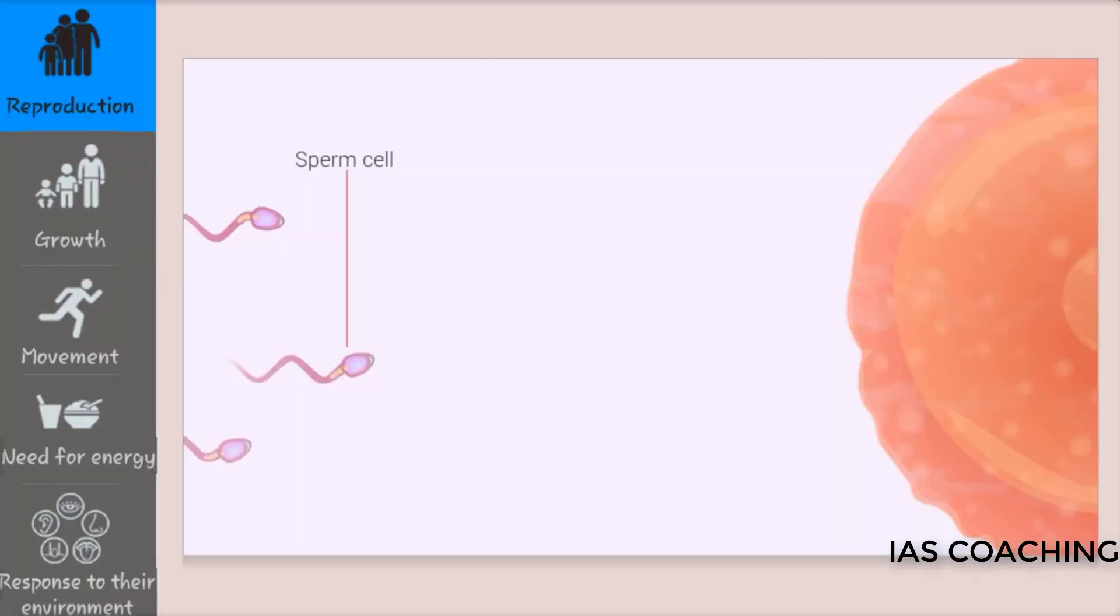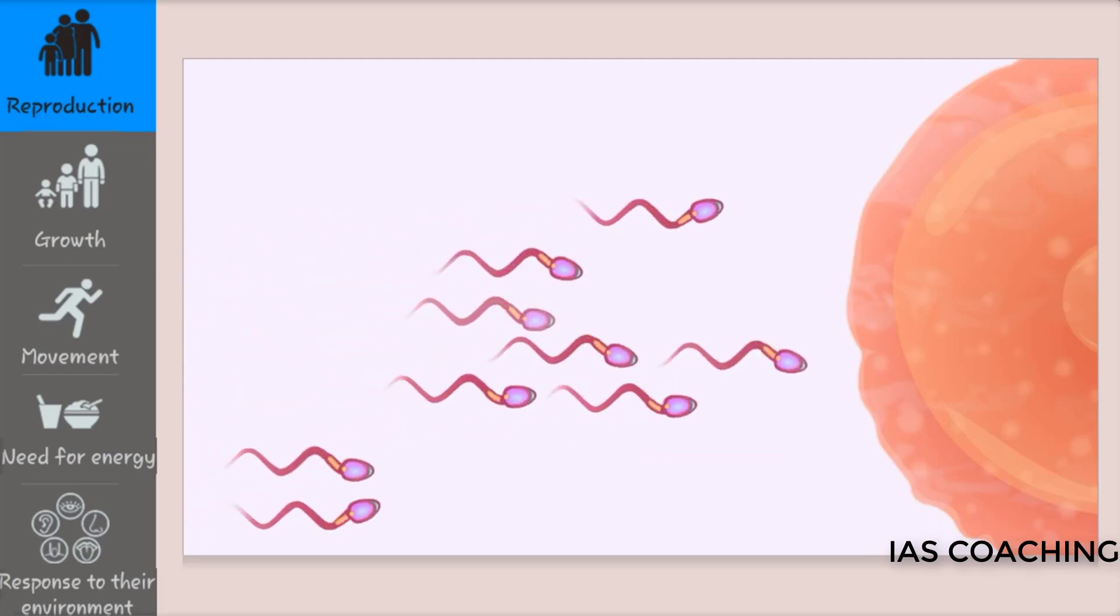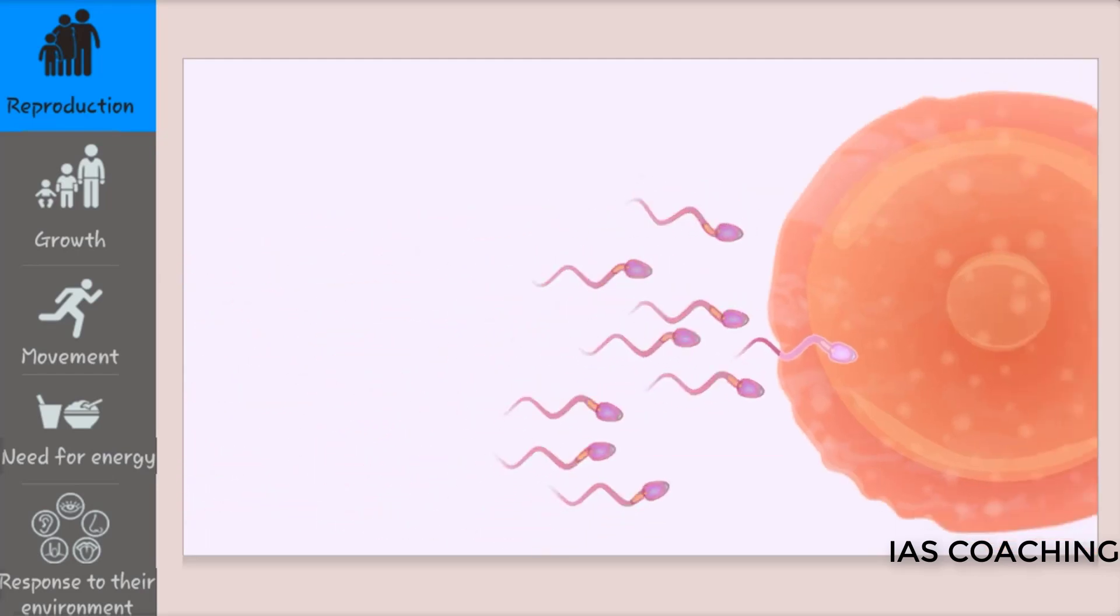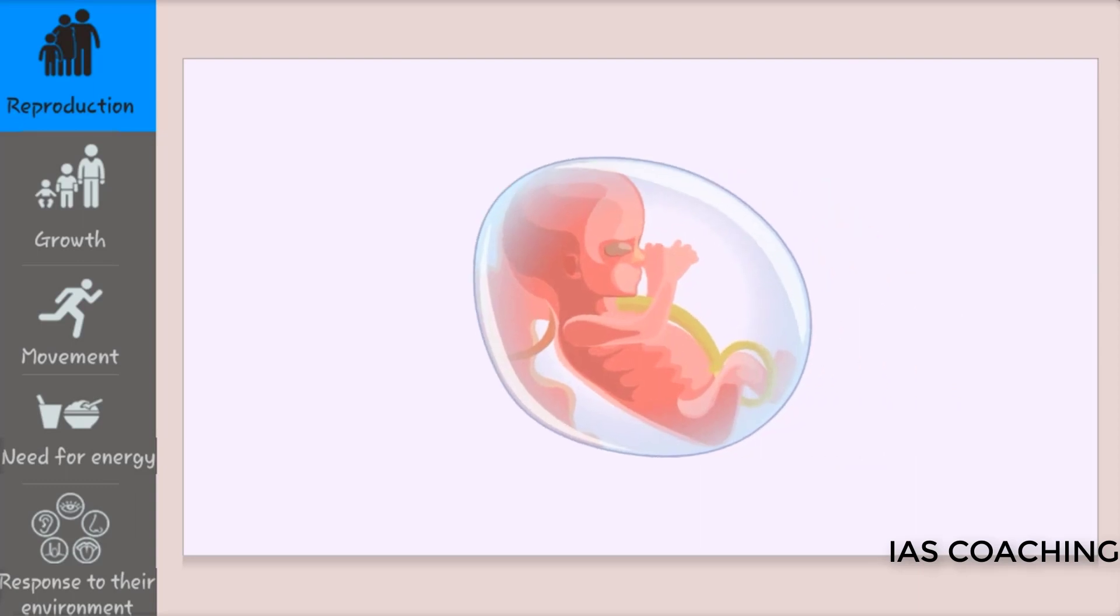Human beings reproduce when a sperm cell from the male body swims towards the female gamete or egg and penetrates the outer part of the egg. Once a sperm cell fertilizes the egg cell, it becomes a zygote. The zygote or fertilized egg develops into an individual which possesses half the DNA of each of its two parents.